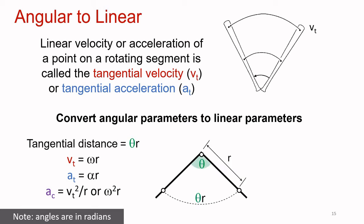Here we see how to convert between angular and linear parameters. The tangential distance equals the angle theta in radians multiplied by the radius. Tangential velocity, v subscript t, is calculated as angular velocity in radians per second multiplied by the radius. Tangential acceleration, a subscript t, is calculated as angular acceleration in radians per second per second multiplied by the radius. A subscript c at the bottom is the centripetal acceleration — the linear acceleration directed towards the centre of the circle.